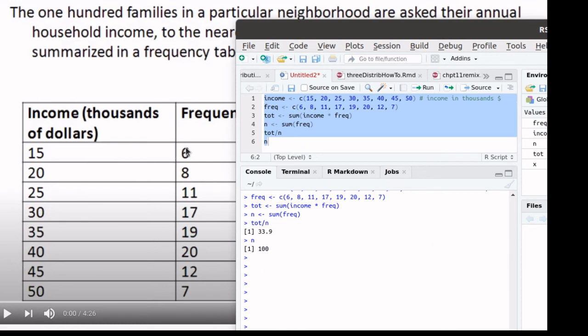So one way to do that would be to just start counting up: 6 plus 8 plus 11, until we got up to where we were looking at 50 items. But R can actually tell us that information. Let me show you how to do that. I'm going to clean up the script a little bit here.